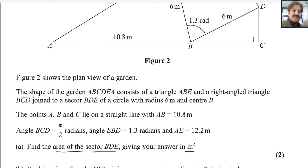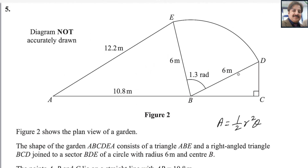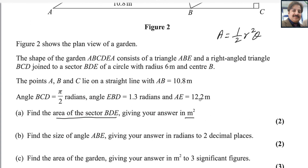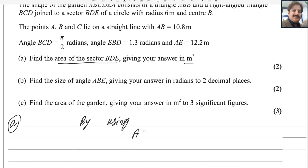To find the area of the sector, the formula is 1/2 r² θ. Using this formula we can find the area of sector BDE — everything is there, the radius is given and the angle is there. To find the area of sector EBD or BDE we can use the same formula: area of sector equals 1/2 r² θ.